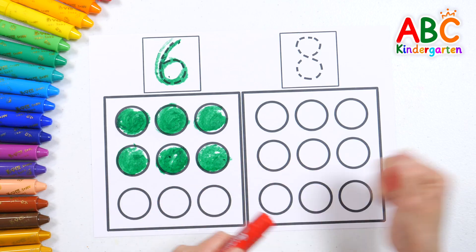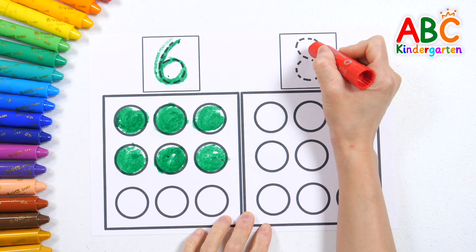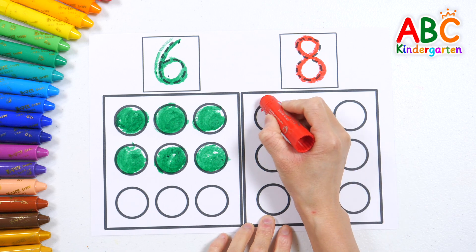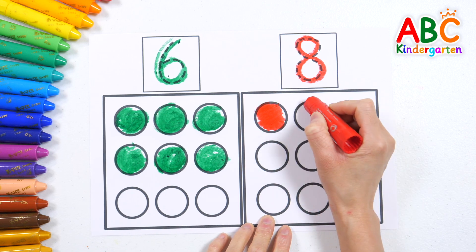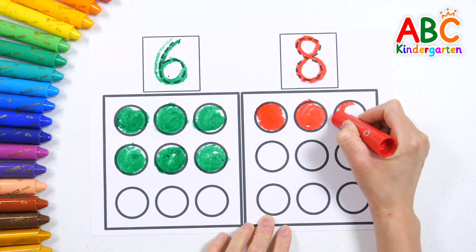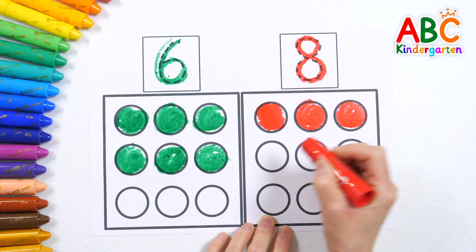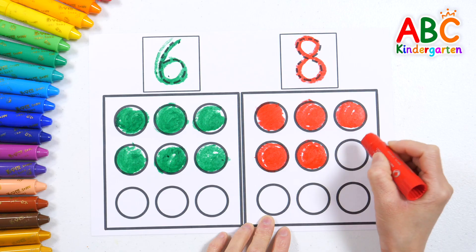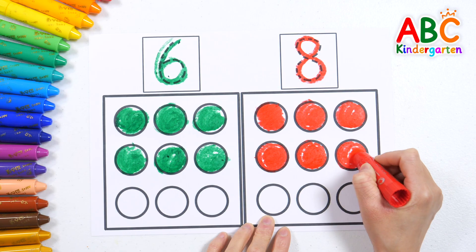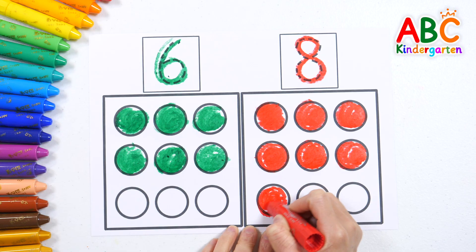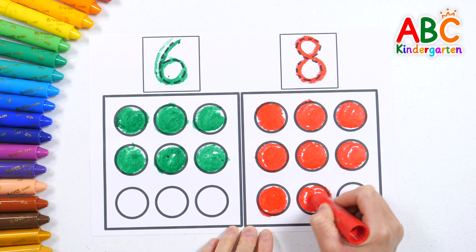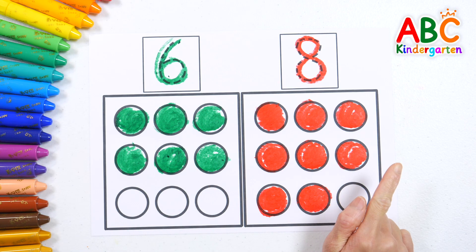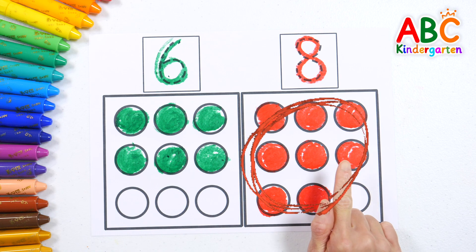Now let's write 8 with a red crayon and color it in. 8 — let's color 8 circles. 1, 2, 3, 4, 5, 6, 7, 8. Great work! Between 6 and 8, which number is bigger? That's right! 8 is bigger than 6. Excellent job!